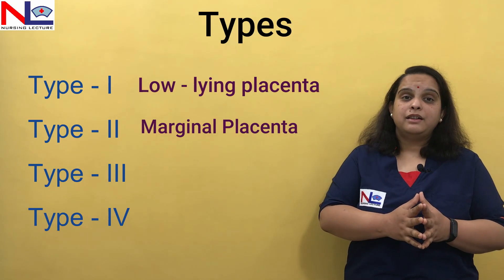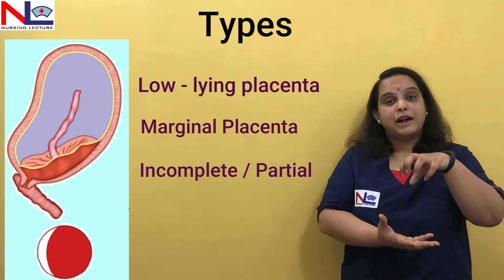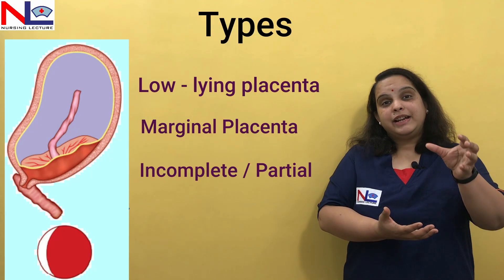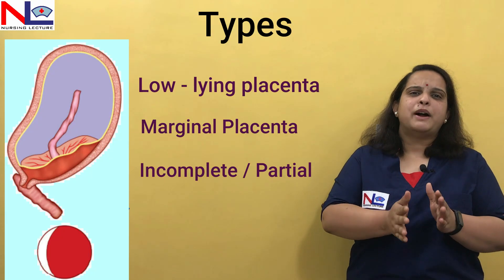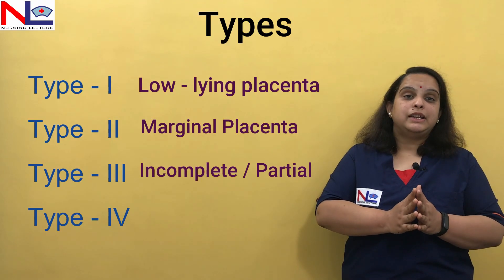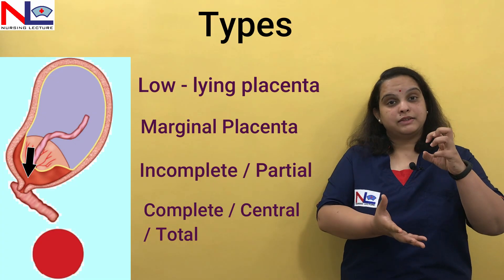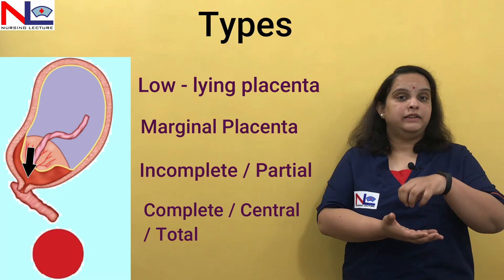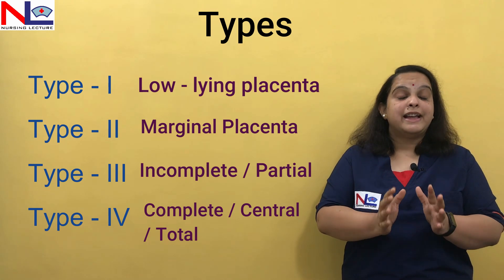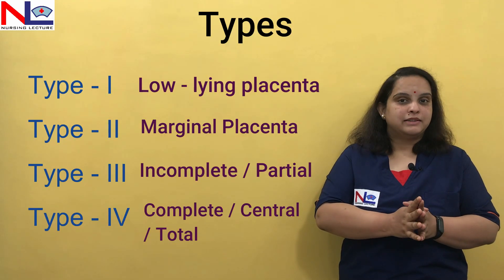Type three is incomplete or partial placenta previa, where the placenta is implanted over the internal os, but once the cervix dilates, it only partially occludes the cervical opening. Type four is complete, where whether the cervix is closed or dilated, the placenta completely lies over the internal os. Types three and four are the major types of placenta previa, while types one and two are the minor types.